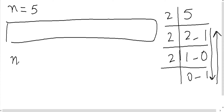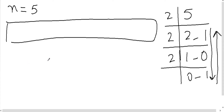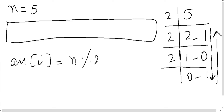Hum kya kaam karenge: n ka modulus lenge 2 ke saath aur use save kiraate jayenge — array ki i location ke andar aap ne save kiraate jana hai each time n modulus 2. Is se aap ko remainder milega. First time hamare paas jo n tha woh five hai.